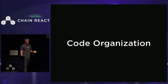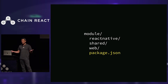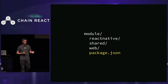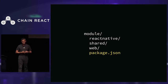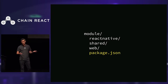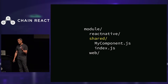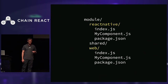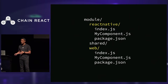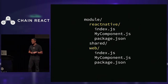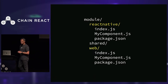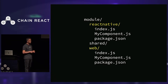Let's take a look at how we organize our code to do this. The basic folder structure of one of our modules has a shared folder, a React Native folder, a web folder, and a package.json at the root. The root package.json declares global dependencies and has run scripts for watching, building, and initializing. The shared folder contains our shared business logic — the basis we build all platform-specific components on top of. The web and React Native folders contain platform-specific components, each with their own package.json and platform-specific dependency declarations.